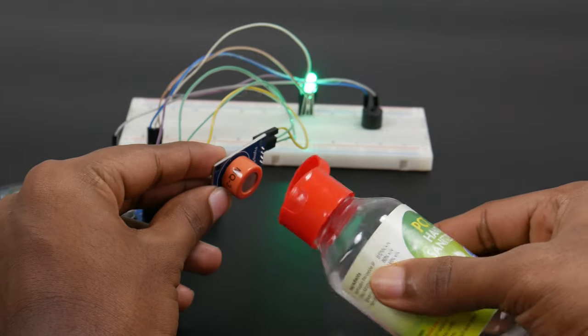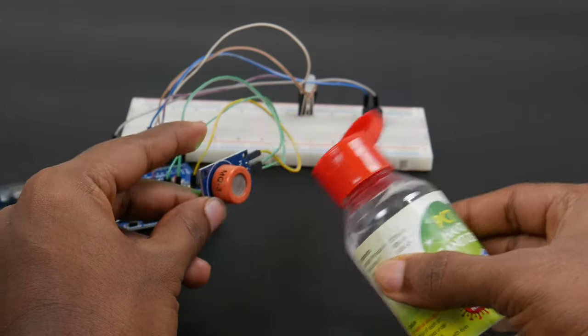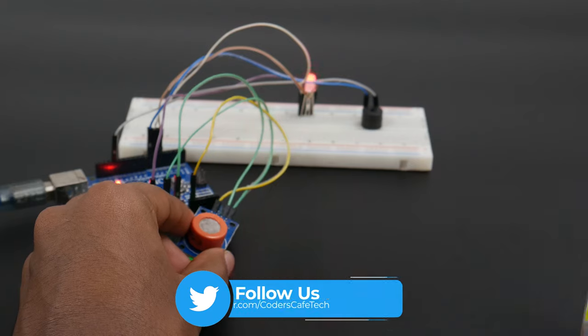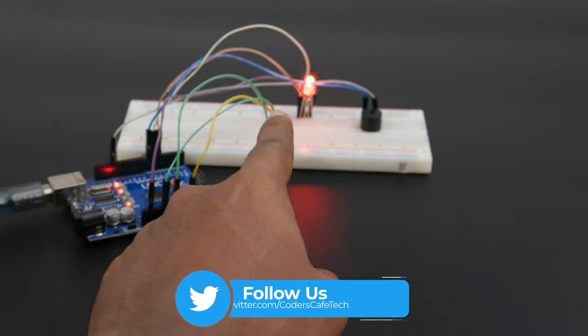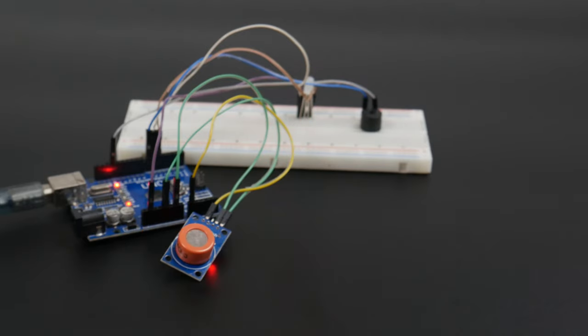When we spray the alcohol, the buzzer is making noise and the green color of the LED is changed to red, both indicating the presence of alcohol in the air. Now the test is completed and our MQ3 is working flawlessly.